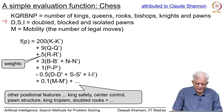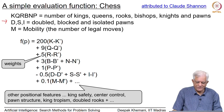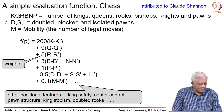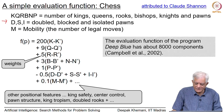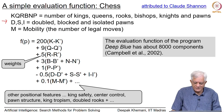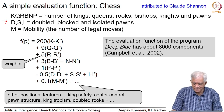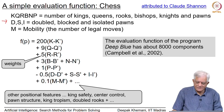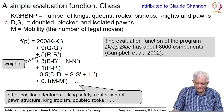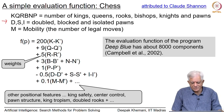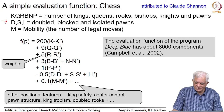The program Deep Blue, which beat Kasparov in 1997, has about 8000 such components — 8000 different evaluation components. This is according to the paper published by Campbell, one of the authors of the program, in 2002.